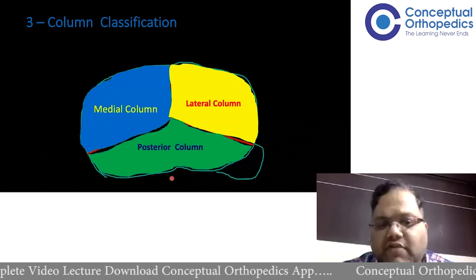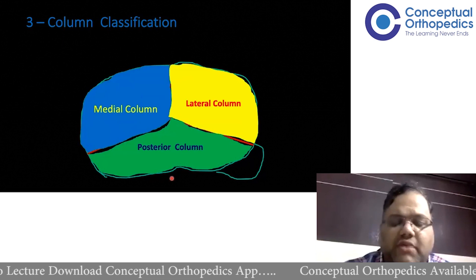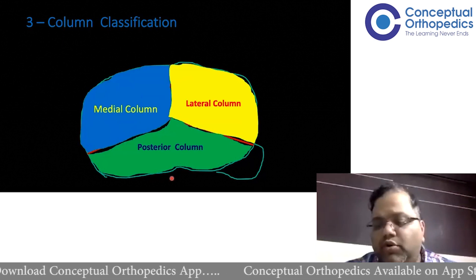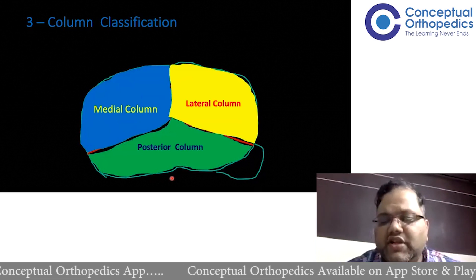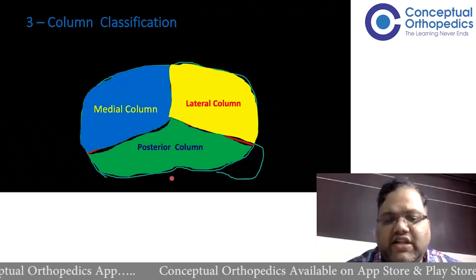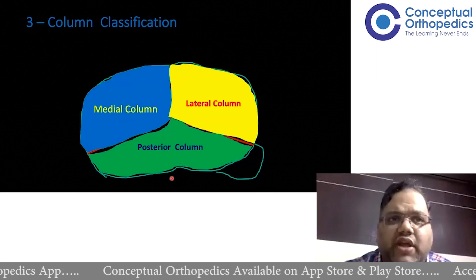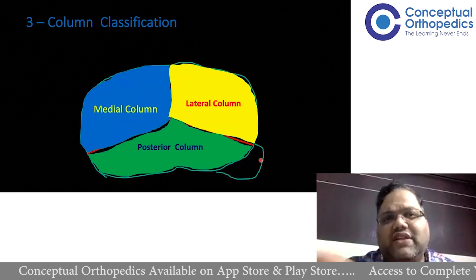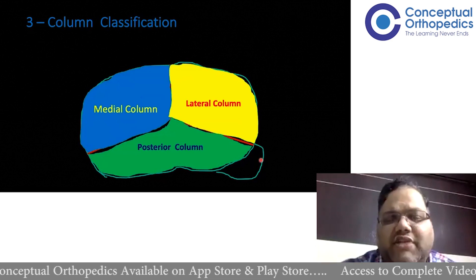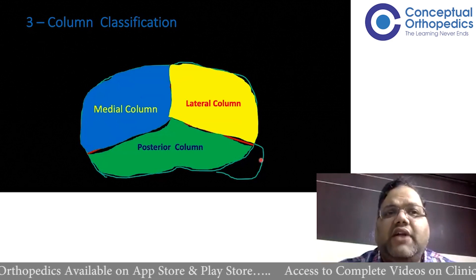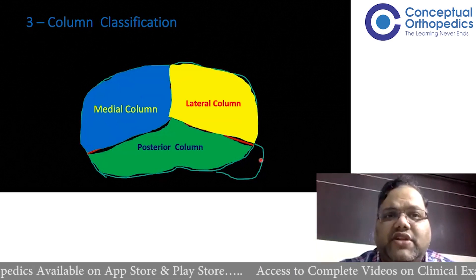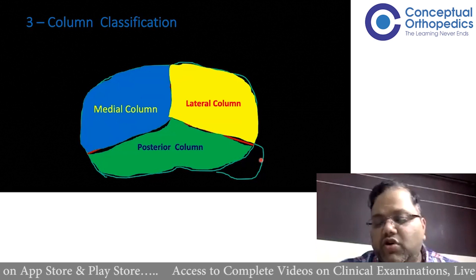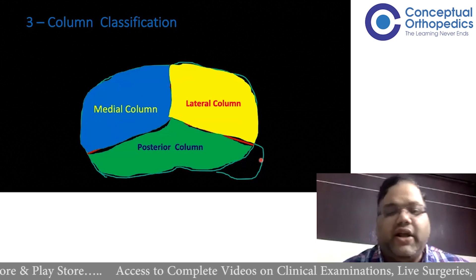This subdivision is to determine whether we require posterior medial, posterior lateral, or both fixations. The axial CT cut is taken at the level where the fibular head is just seen, which corresponds more or less to the level of the articular surface. We then assess whether there is depression, split, or both, and which columns are involved, because all involved columns need to be addressed.